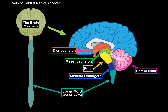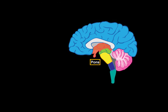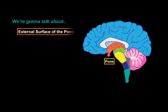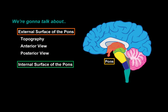We have the cerebellum, and the diencephalon and telencephalon. Our focus in this video is going to be the pons. We're first going to cover the external surfaces of pons — its topography and what structures you'll find from an anterior view and a posterior view. Then we're going to slice up the pons and look at the internal surface, to see how the grey matter and white matter are arranged within it. There's also a little quiz at the end.